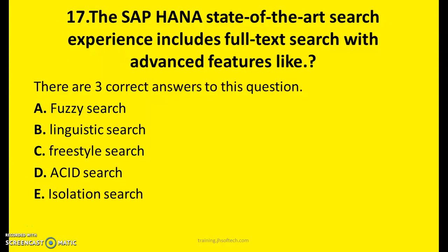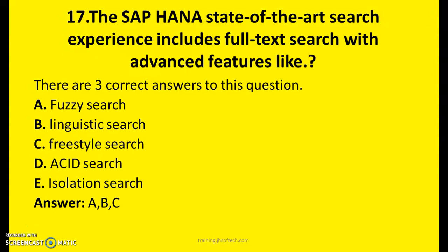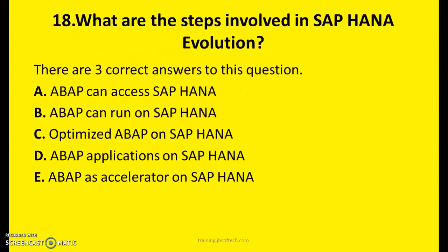Question Seventeen: The SAP HANA state-of-the-art search experience includes full text search with advanced features. There are three correct answers. A: Fuzzy search. B: Linguistic search. C: Freestyle search. D: Acid search. E: Isolation search. The answers are A, B, and C. Question Eighteen: What are the steps involved in SAP HANA evolution? Three correct answers: A — ABAP can access SAP HANA; B — ABAP can run on SAP HANA; C — Optimized ABAP on SAP HANA. Answers are A, B, and C.